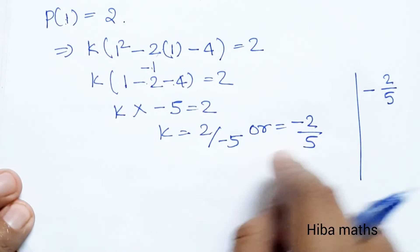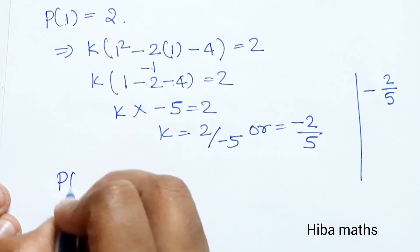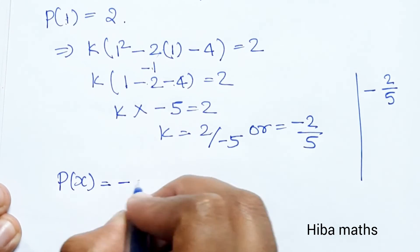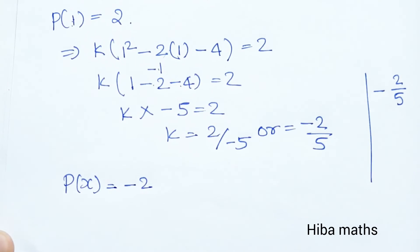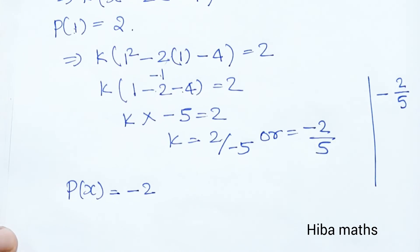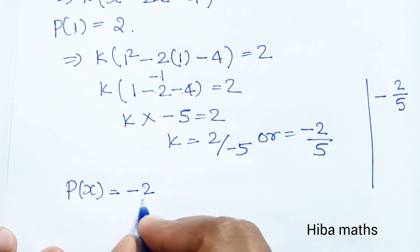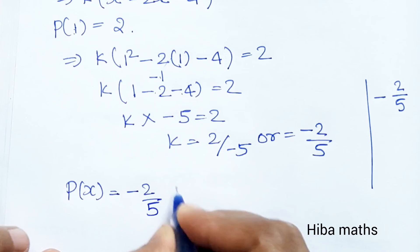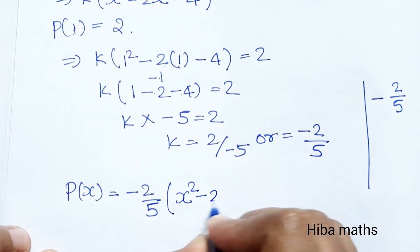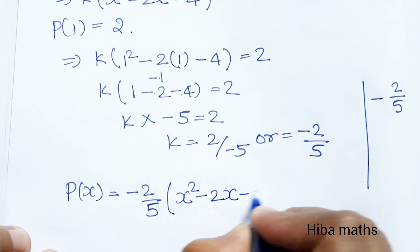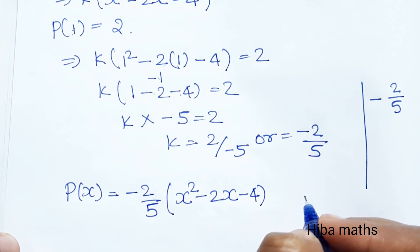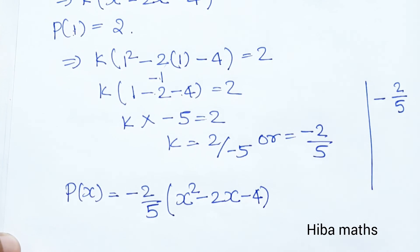Therefore k = minus 2 by 5. The quadratic polynomial is p(x) = minus 2 by 5 times (x squared minus 2x minus 4). Thank you so much for watching.